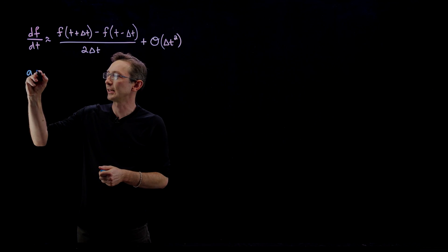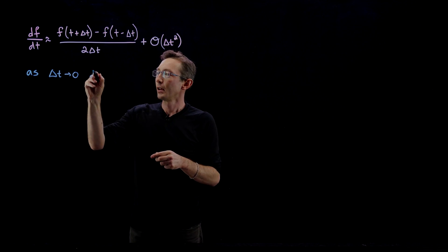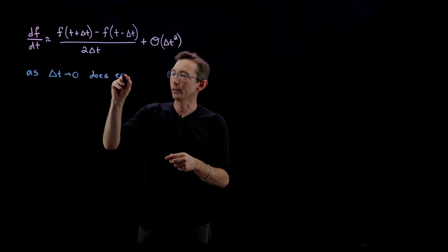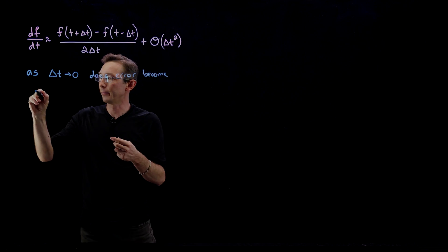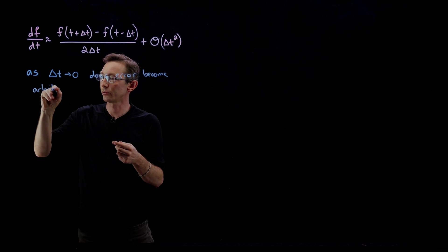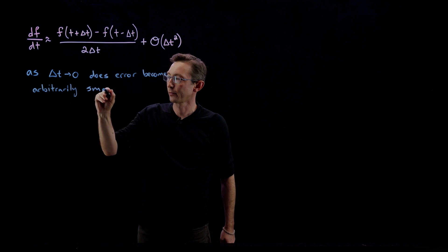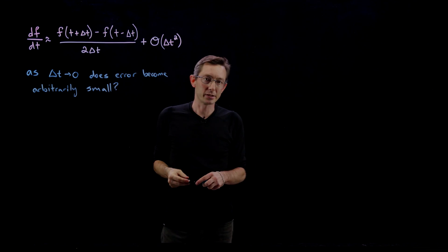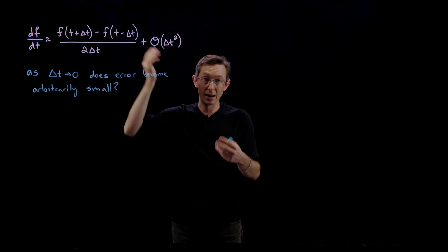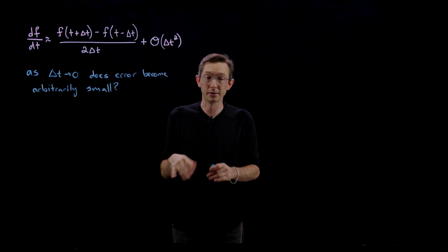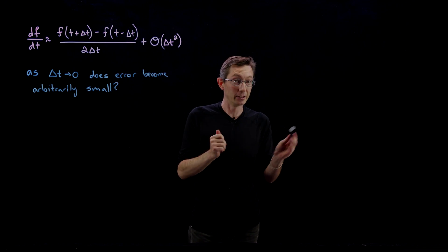The question is: as delta t goes to zero, does the error become arbitrarily small? Mathematically yes — mathematically this error does go to zero as delta t goes to zero. But in practice, on a computer, the answer is absolutely not.